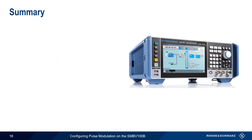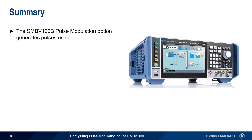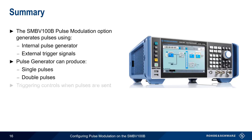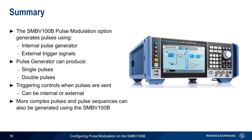Let's summarize what we've covered. The SMBV100B Pulse Modulation option generates pulse signals using either its internal pulse generator or external trigger signals. The internal pulse generator can produce pulses as single pulses or as double pulses. Triggering controls whether pulses are transmitted once, continuously, or for a defined period of time. And triggering can also be either internal or external. Although this presentation discusses using the SMBV100B to generate basic unmodulated pulses, it's also capable of generating more complex pulse sequences and modulated pulses as well.